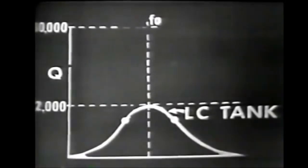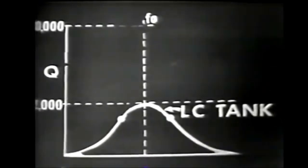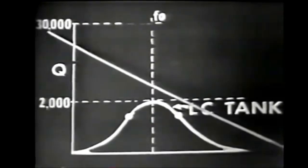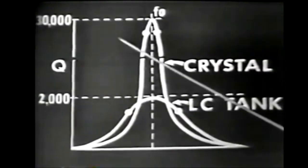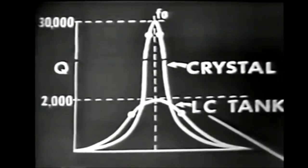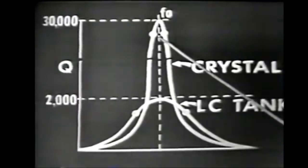The Q of the crystal circuit is many times greater than that of the LC circuit. The Q of an LC tank circuit is seldom greater than 2,000, whereas the Q of the crystal is sometimes as great as 30,000. Comparing these two, you can see that the Q of the crystal would be many times greater than that of the LC tank circuit. Because of this high Q, the crystal would have better frequency stability.